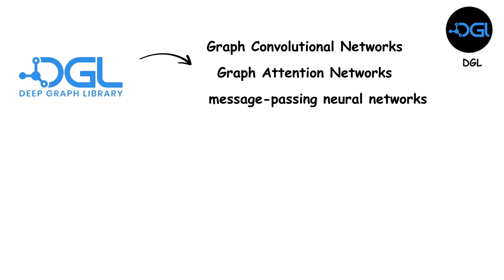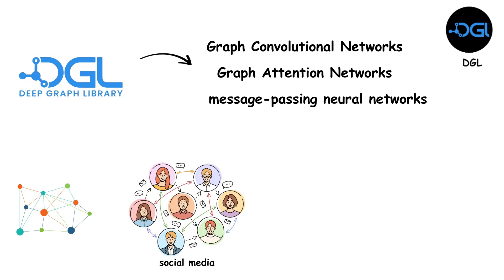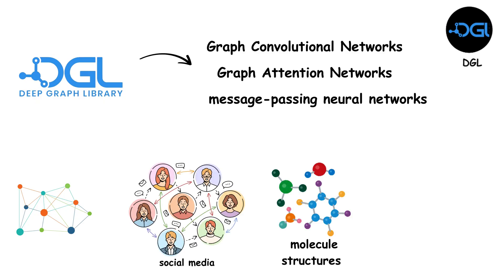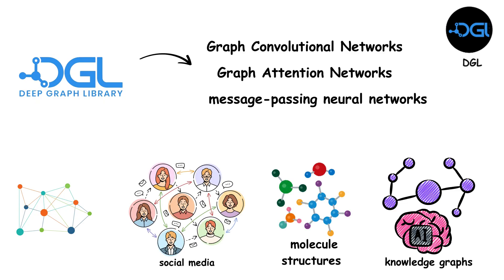DGL provides efficient implementations of graph neural network models like graph convolutional networks, graph attention networks, and various message-passing neural networks. It's specifically designed for applications where data is naturally represented as graphs, such as social networks, molecule structures, or knowledge graphs.